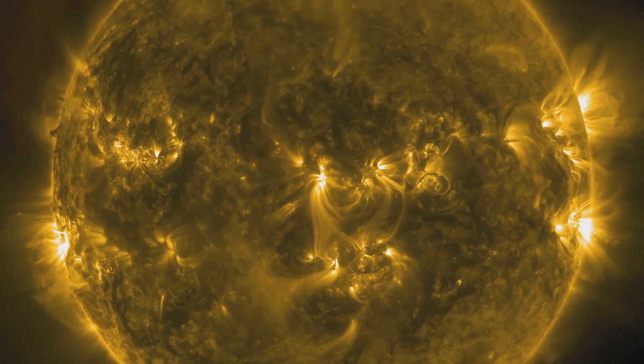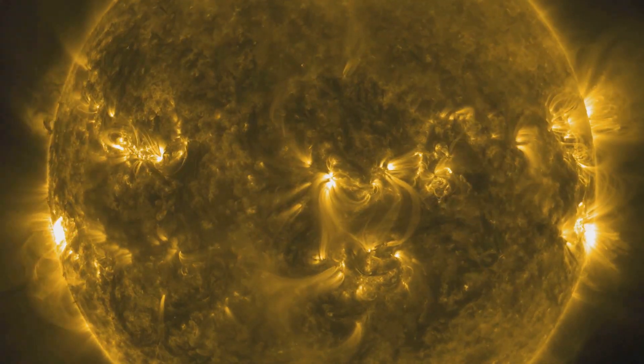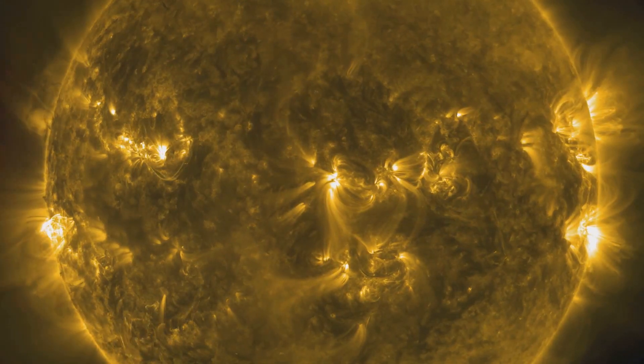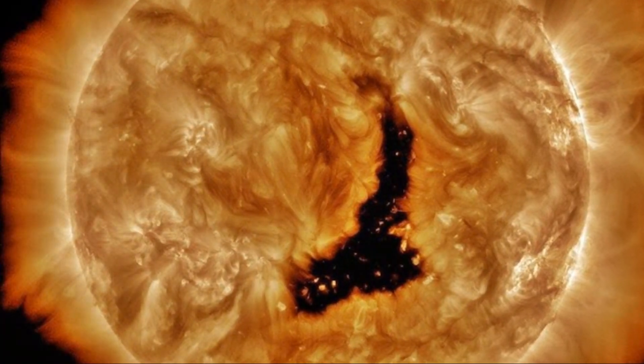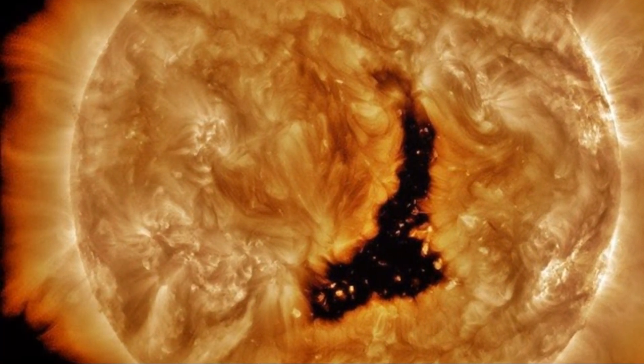The Sun's unpredictability didn't stop there. Fast forward to December 3rd, 2023, and the discovery of a substantial coronal hole in the Sun's atmosphere. This abnormality led to two powerful explosions directed right toward our planet.